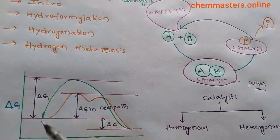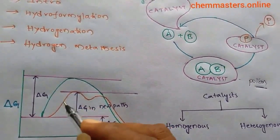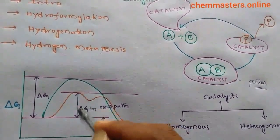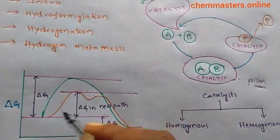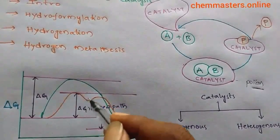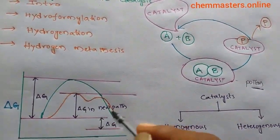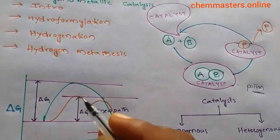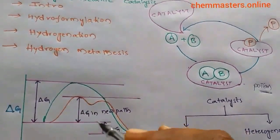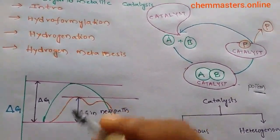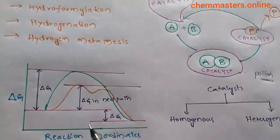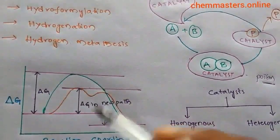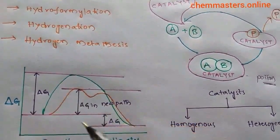When you add a catalyst to the same reaction, you observe that the Delta G‡ along the new path is decreased, meaning the reaction can be completed in less time. So there are two paths in this graph: one without the catalyst with higher activation energy, and one with the catalyst with lower activation energy.